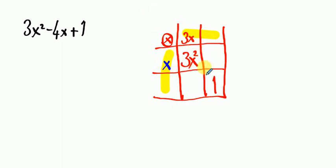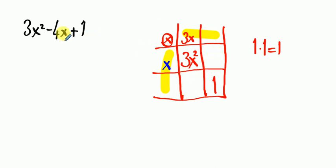Secondly, what makes 1? Let's write here: 1 times 1 equals 1. But after adding these two middle boxes, we need to reach minus 4x — the midterm.